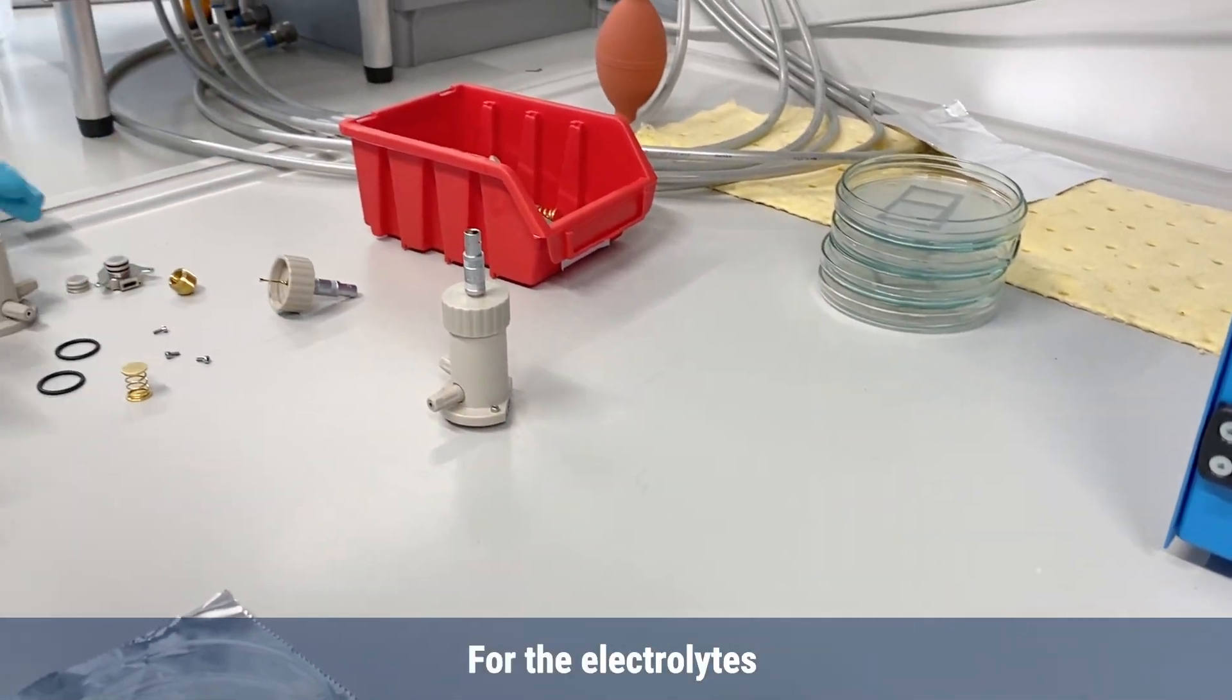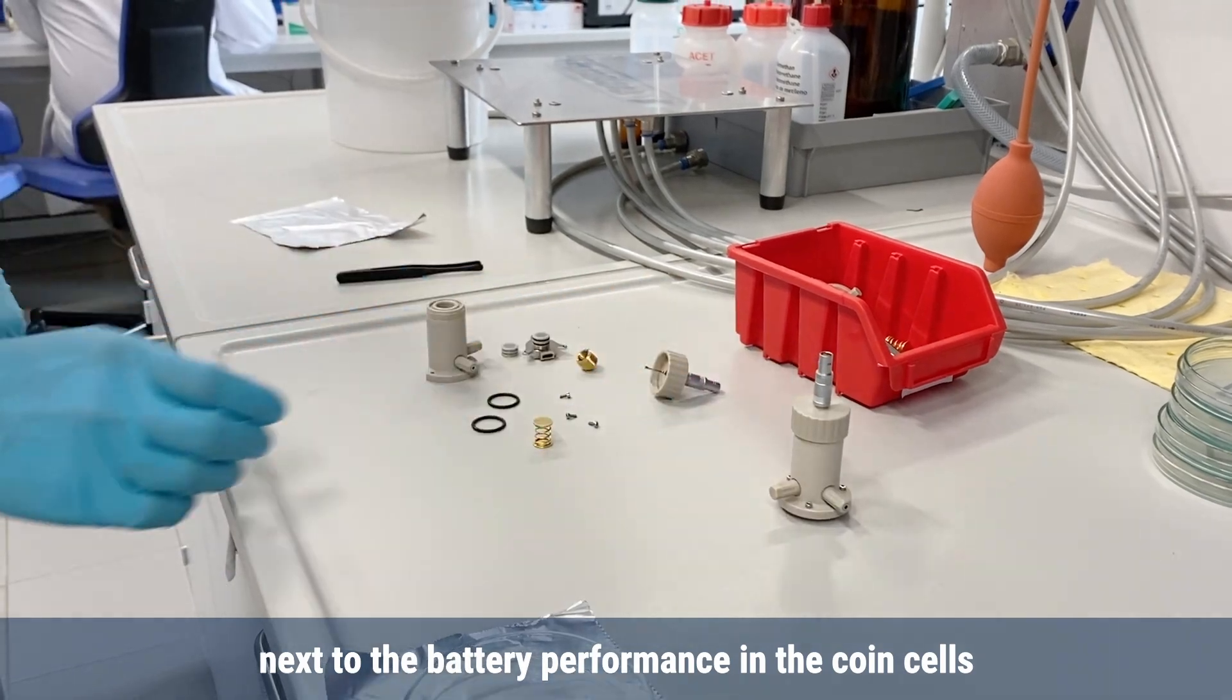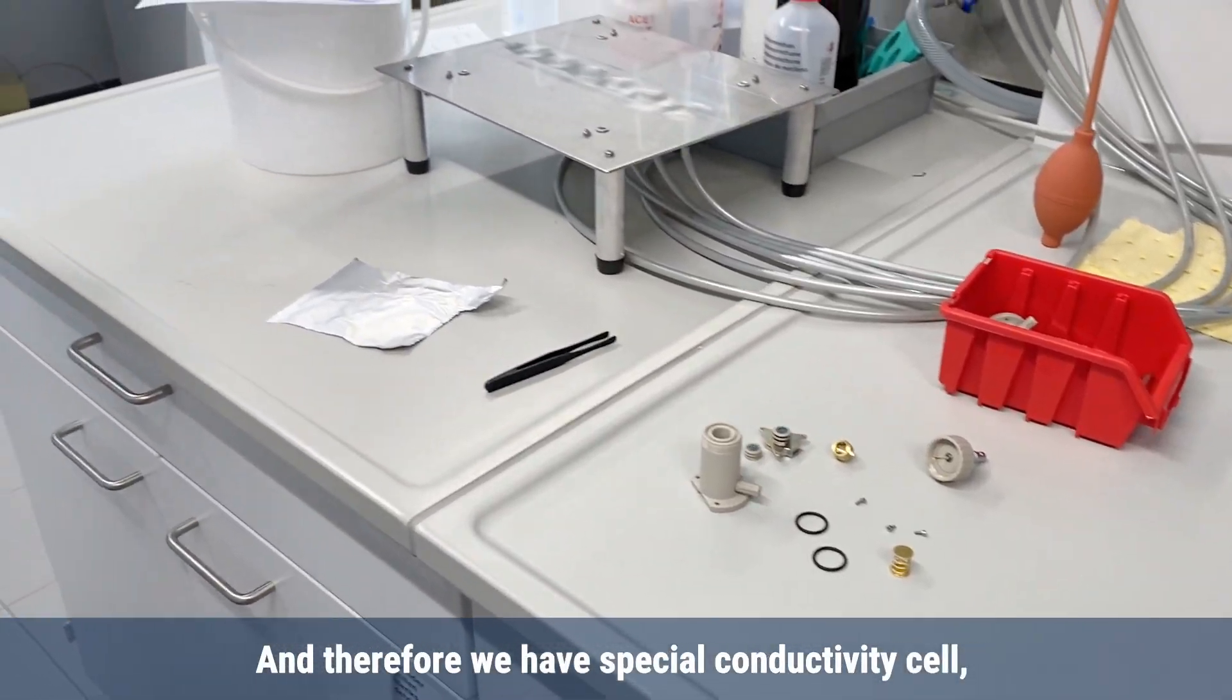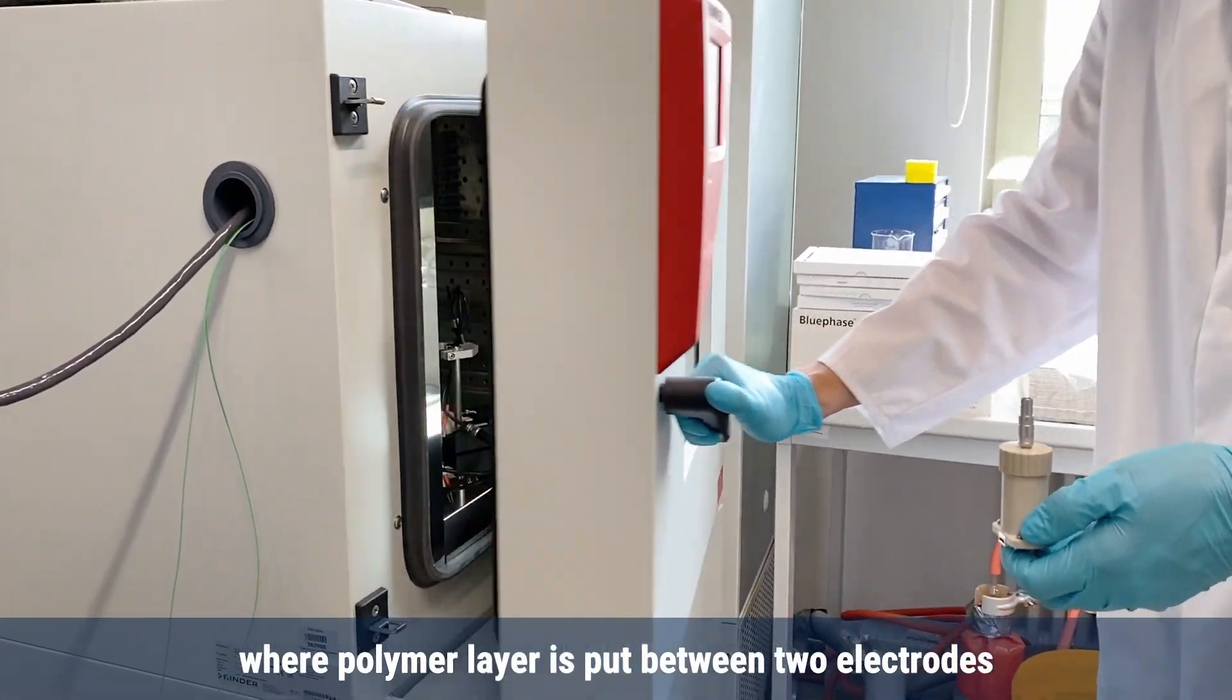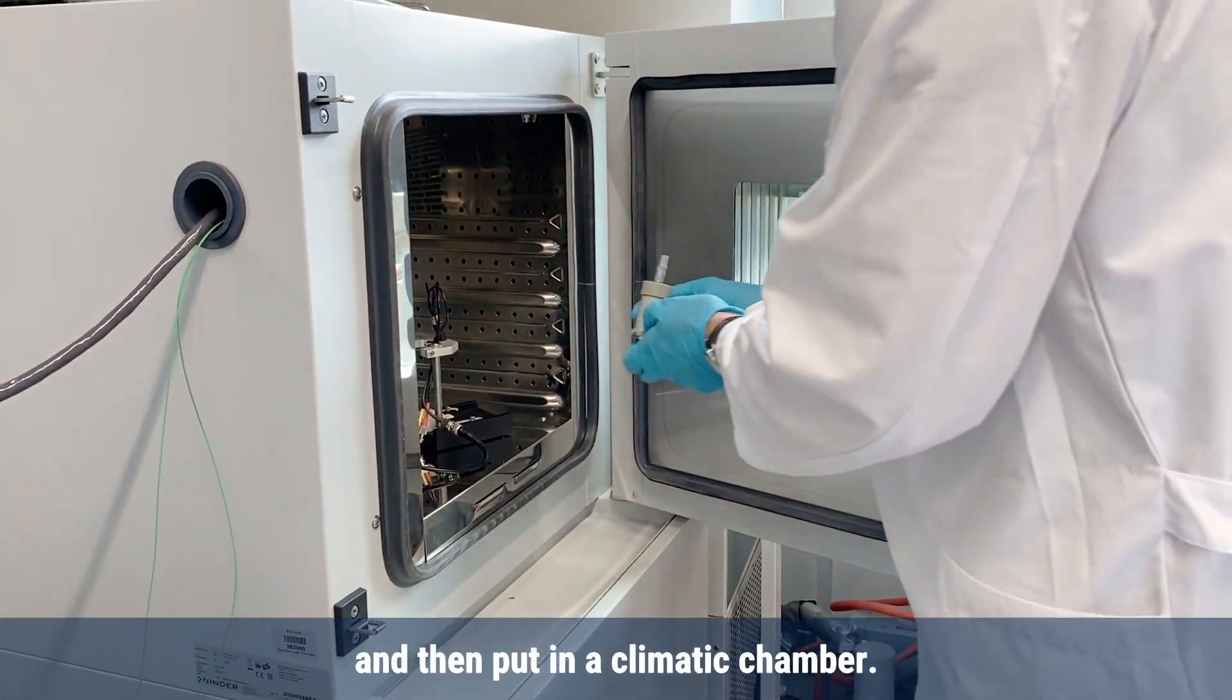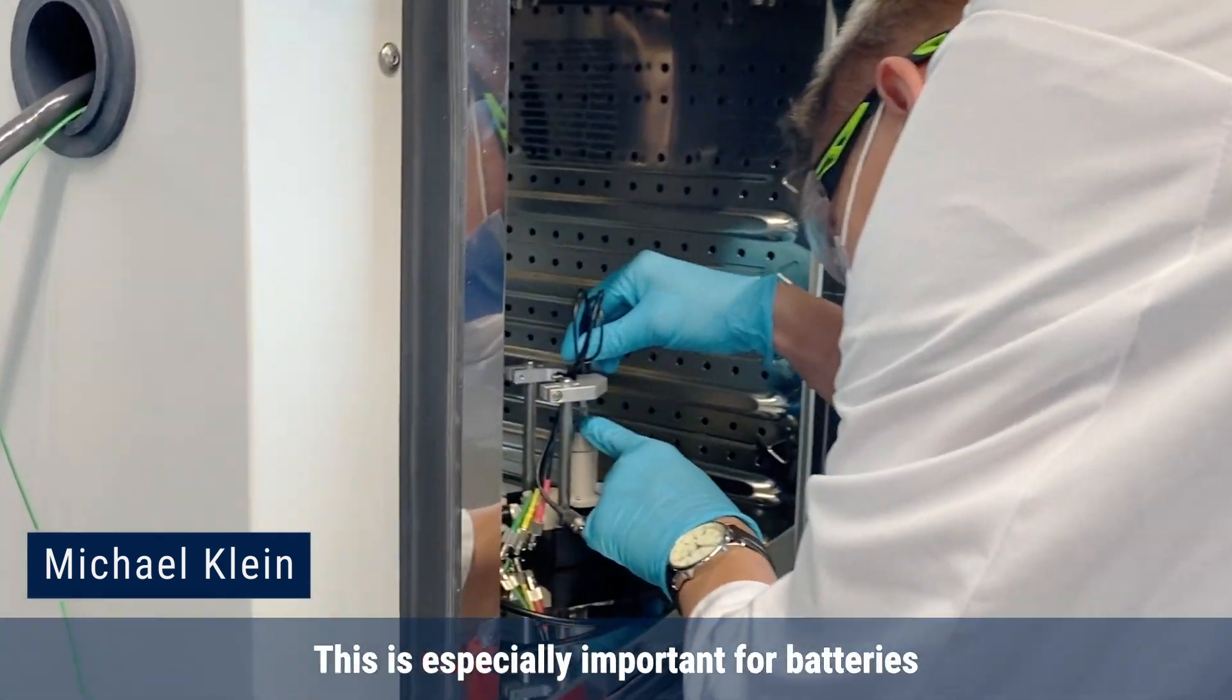For the electrolytes, another property that we are investigating next to the battery performance in coin cells is the ionic conductivity. For this, we have special conductivity cells. The polymer layer is put between two electrodes and then put in a climatic chamber so you can measure the conductivity at different temperatures. This is especially important for batteries.